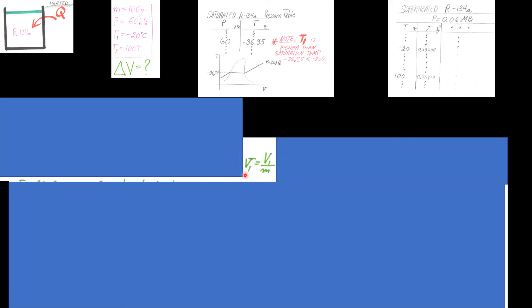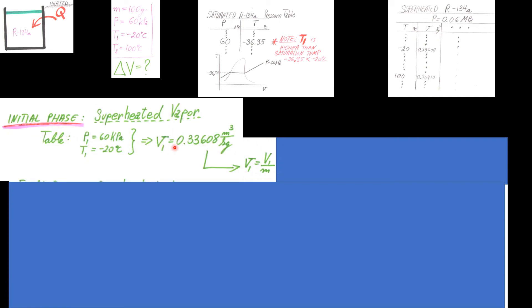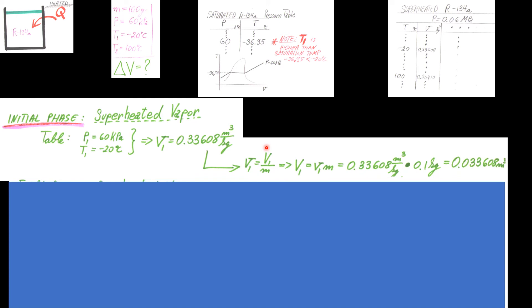So let's use this one. This is what we just got from the table. Pressure, temperature gave us specific volume. We're going to use it in this formula and we're going to be able to find the volume equals to 0.033608 meters cubed.